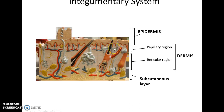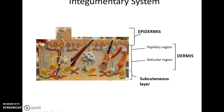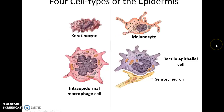The dermis houses many structures important for the functions of the skin. It is broken down into the papillary layer, directly below the epidermis, and deep to that the reticular layer where many structures are embedded. Deep to the dermis is the subcutaneous layer, where many blood vessels pass through and adipose tissue is primarily found. There are four kinds of cells in the epidermis.